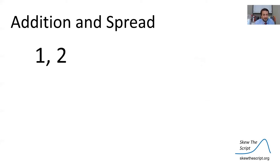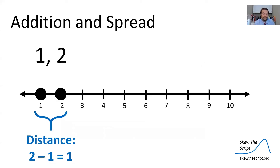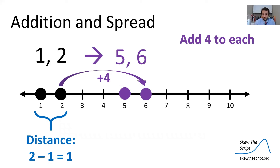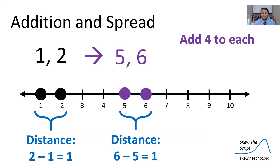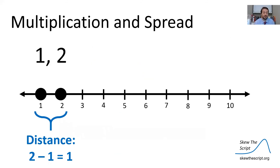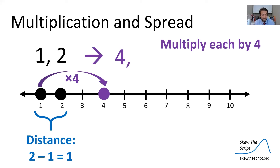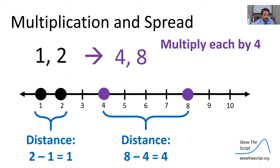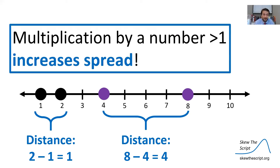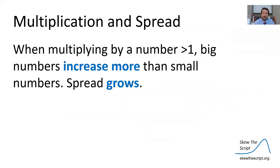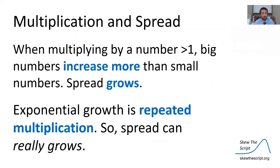Let's talk about some mechanics of addition versus multiplication and spread. Take the values 1 and 2 — the distance between them is 1. If we add 4 to each, we get 5 and 6, and the distance is still 1. So addition doesn't change the spread between two numbers. However, if we multiply them each by 4, 1 becomes 4 and 2 becomes 8 — the distance becomes 4 instead of 1. When multiplying by a number greater than 1, big numbers increase more than small numbers, and the spread between the numbers will grow. Since exponential growth is repeated multiplication, the spread can really grow because we're multiplying over and over.